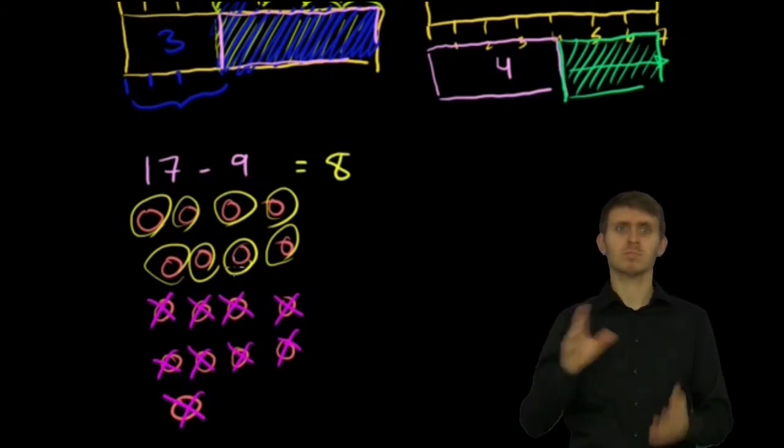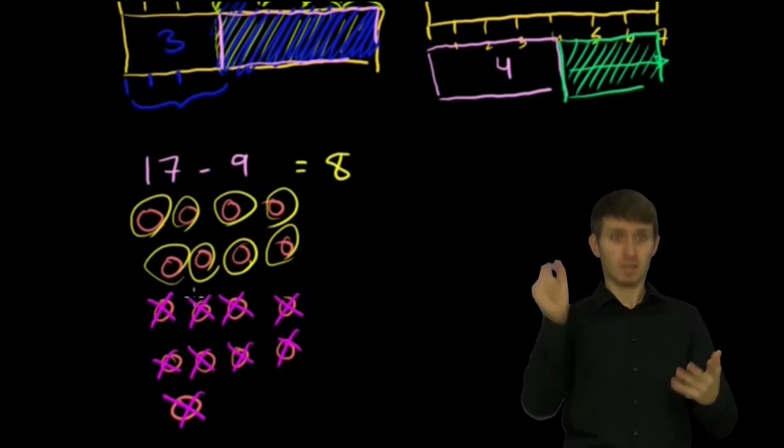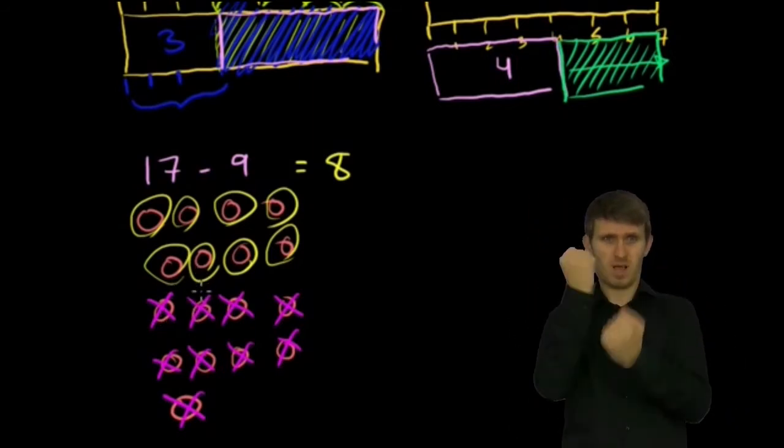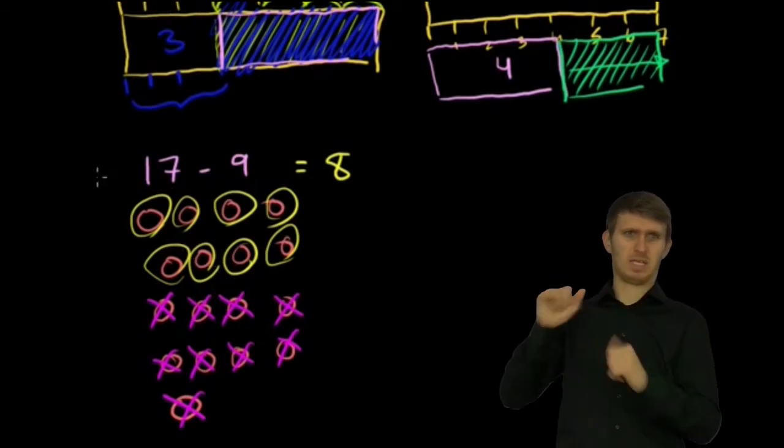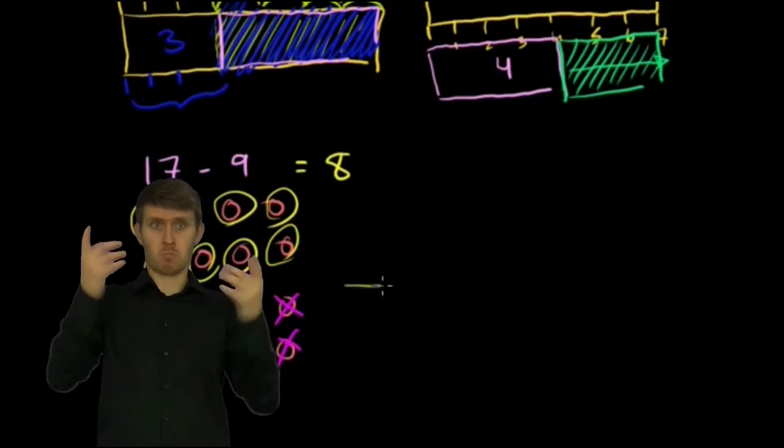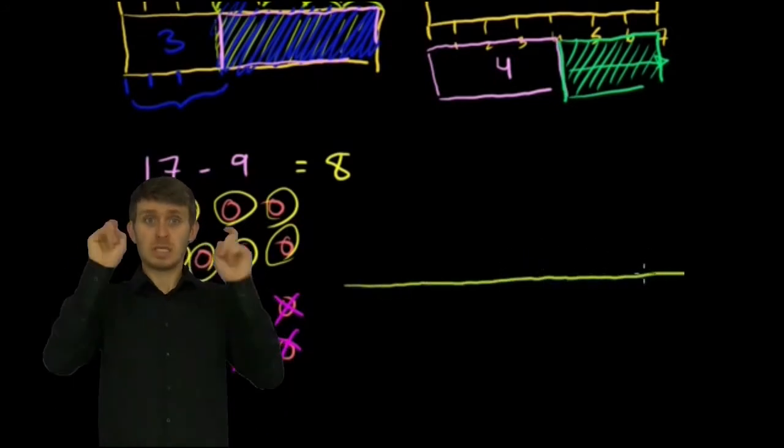But that took a long time. And you can imagine, if this number was a lot bigger, it would have taken me forever to draw all of these circles and then scratch out things. And it would have wasted paper and time, and we have other things to do. So another way you could do it, and maybe this would be easier for you to visualize, is to draw the number line. You don't always have to start at 0.